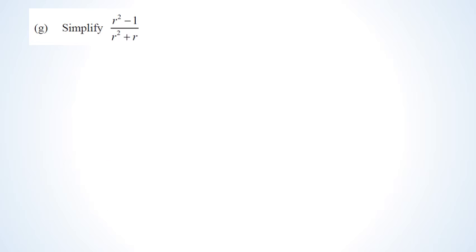This has to be one of my favorite questions. People often see (r squared minus 1) over (r squared plus r) and think r squared and r squared cancel, leaving negative 1 over r. I guarantee most people attempt it that way. But if you know how to factorize, you know that is incorrect.